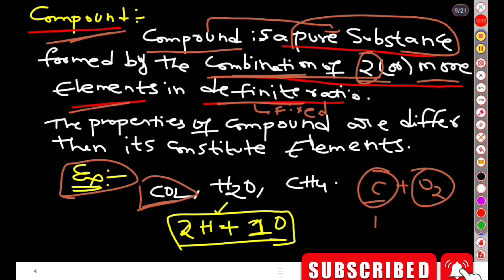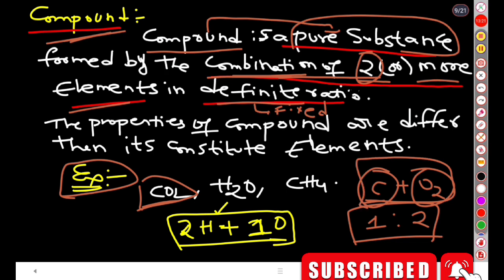In carbon dioxide, carbon and oxygen are combined in the ratio 1:2. When two elements combine in a fixed ratio, they form a compound. The properties of the compound are different from the properties of its constituent elements.